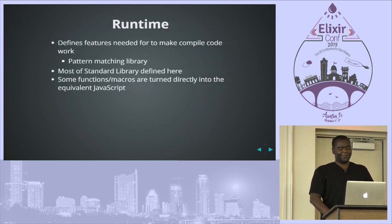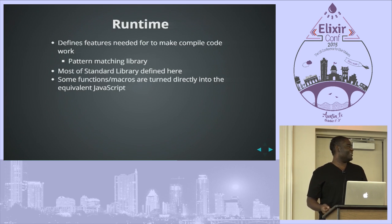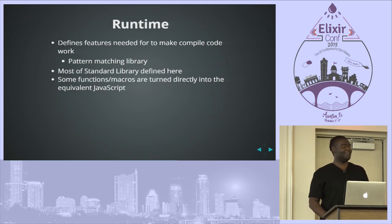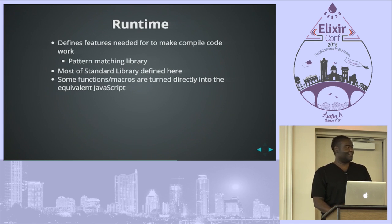The runtime is everything needed so that the translated code can actually run within a JavaScript environment. This includes a pattern matching library, and at some point it'll probably include a protocol library and maybe processes — though that sounds hard. Most of the standard library will be defined here, though most of it isn't yet. Some functions and macros can actually be mapped directly to their equivalent JavaScript code, so the compiler just maps them over.